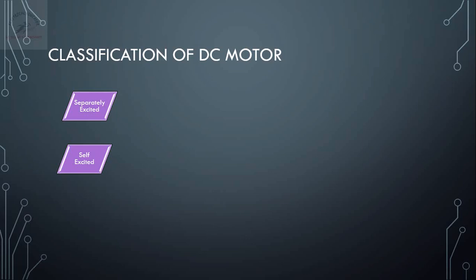The next type is the permanent magnet motor, where we don't have field windings. Field windings create an electromagnet, but instead of an electromagnet we have a permanent magnet in this type of motor. These are the three major categories into which we can classify a DC motor.